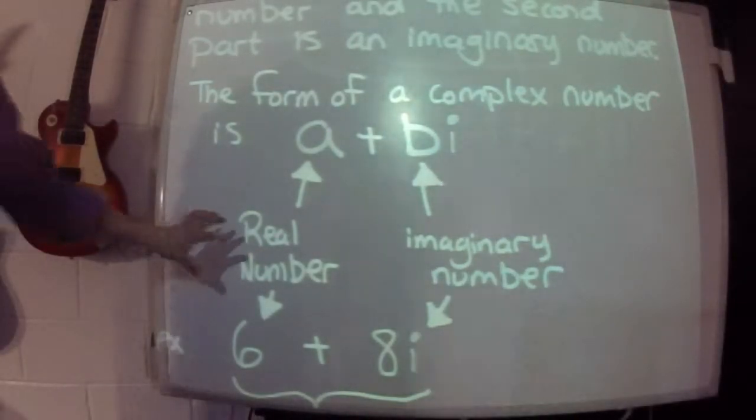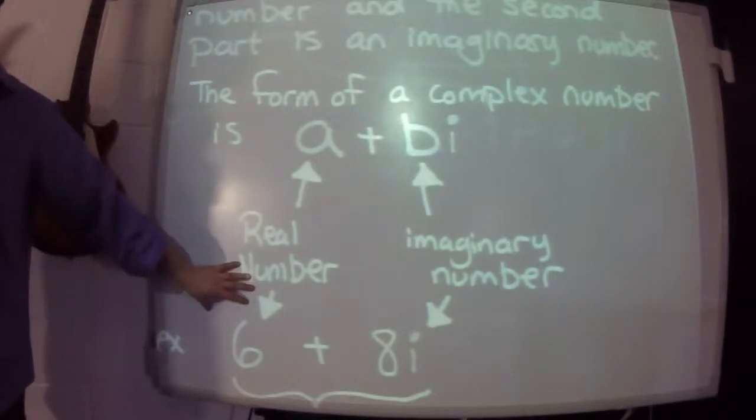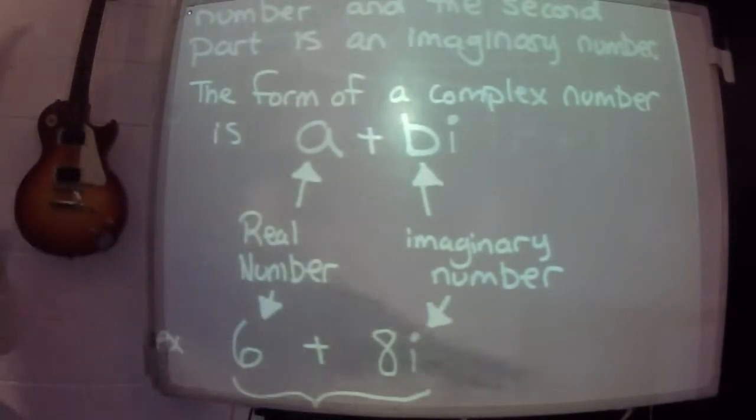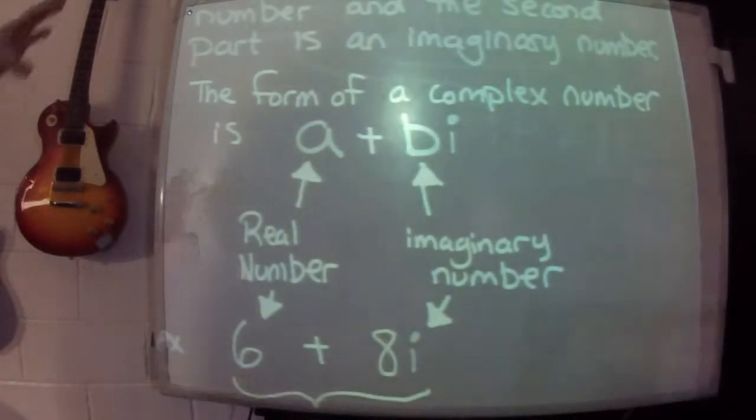Now what is a real number? Well, you know real numbers. Every number that you've been taught since you were four years old is a real number. Five, or 17, even negative two. Fractions, one-fifth. Decimals, negative 6.7. Those are all real.